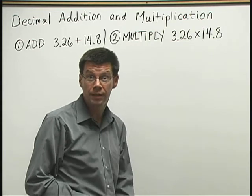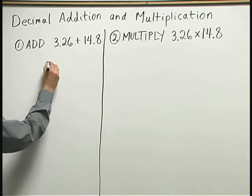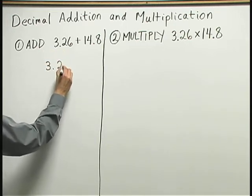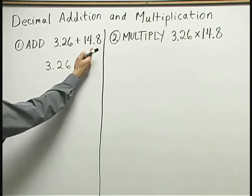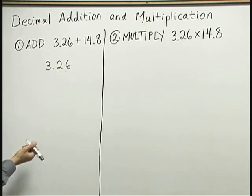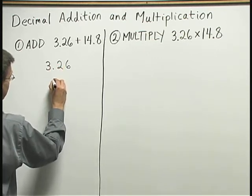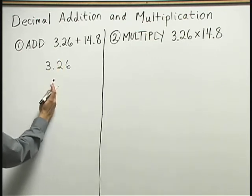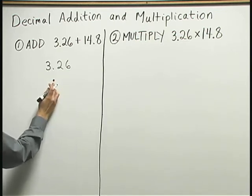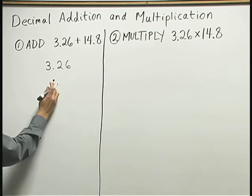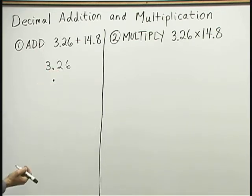Let's do the addition first of all. I'll recopy 3.26 and then underneath it I want to write the 14.8. I need to be careful to line up my decimal point when I add.